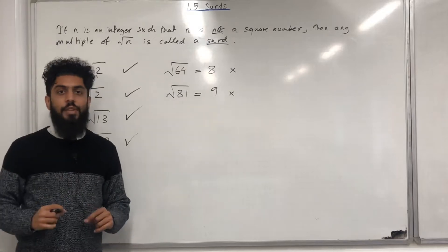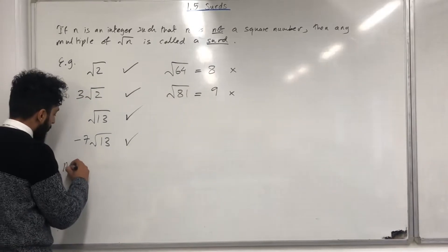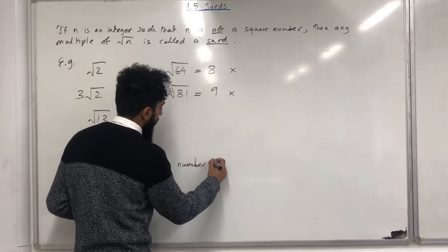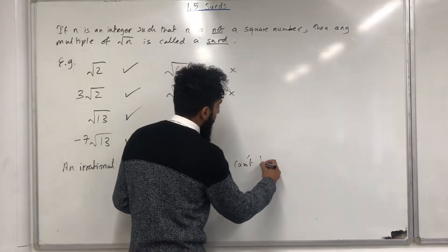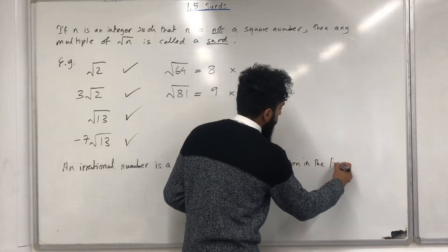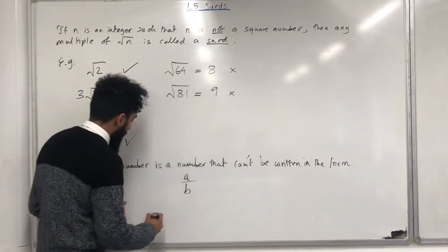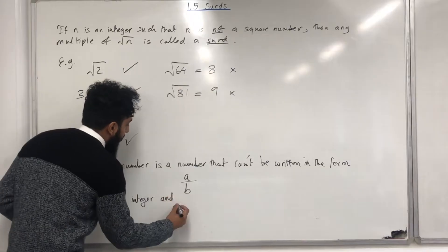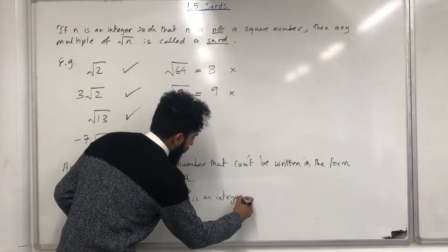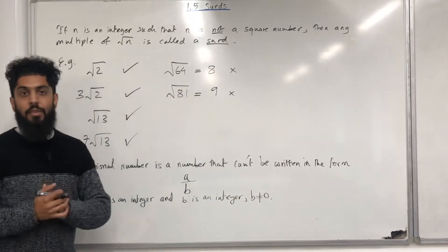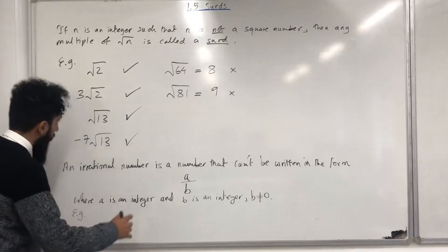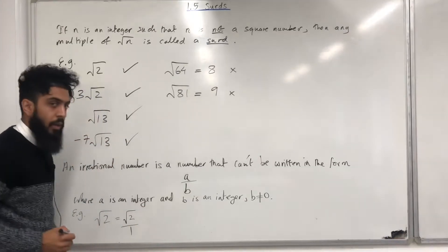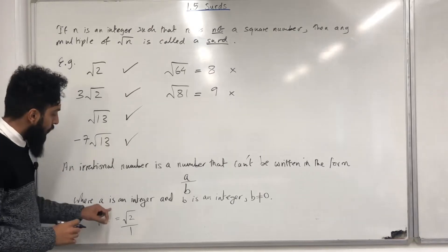Now I'm going to go through the definition of an irrational number. An irrational number is a number that can't be written in the form a over b, where a is an integer and b is an integer, and b is not equal to 0. For example, square root 2 can be written as square root 2 over 1. 1 is an integer, but square root 2 is not an integer, hence square root 2 is an irrational number.